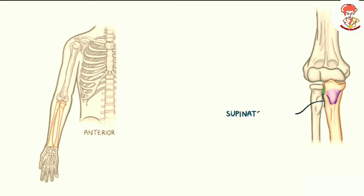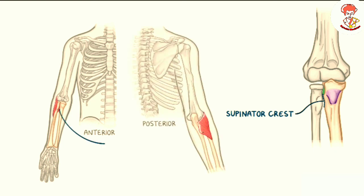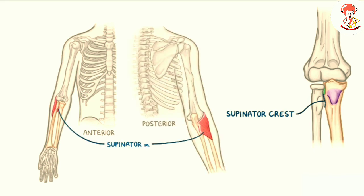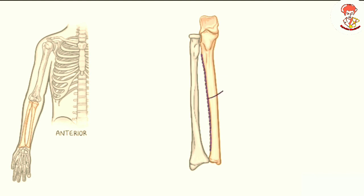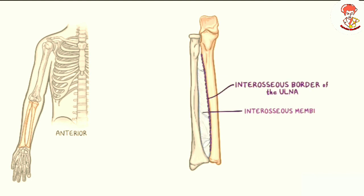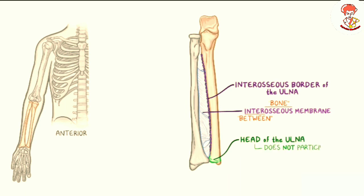On the lateral side of the coronoid process there is a smooth concavity called the radial notch of the ulna, which articulates with the disc-shaped head of the radius, forming the proximal radioulnar joint. The radial head is tied to the radial notch of the ulna by a ring-shaped ligament called the annular ligament. On the lateral side of the ulna, inferior to the radial notch, is the supinator crest, which is the attachment of the deep part of the supinator muscle, needed for forearm supination. Looking at the shaft of the ulna, its lateral side forms a long ridge of bone called the interosseous border of the ulna, where the interosseous membrane attaches. The interosseous membrane — 'inter' meaning between and 'osseous' meaning bone — is a dense connective tissue that connects the ulna and the radial shaft so that the forearm bones move as one.